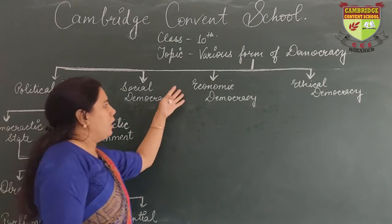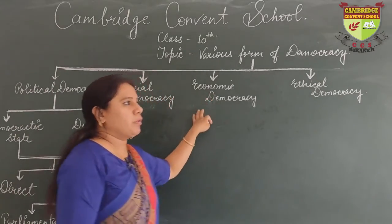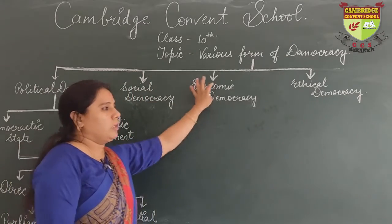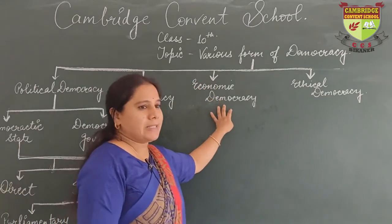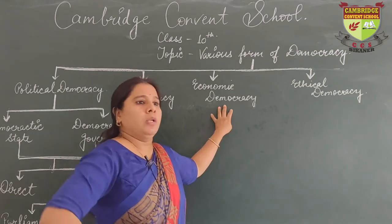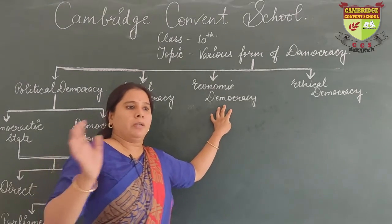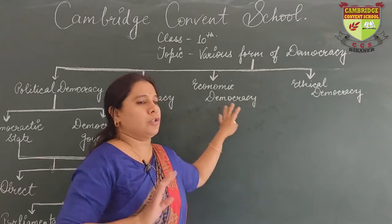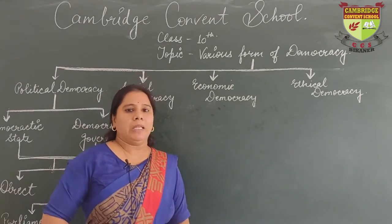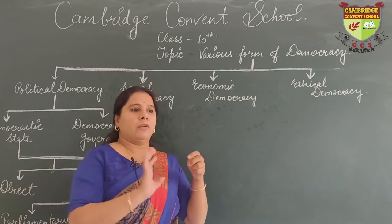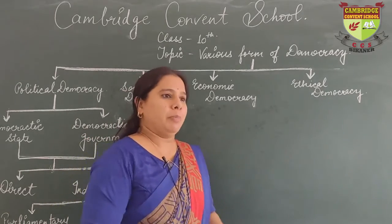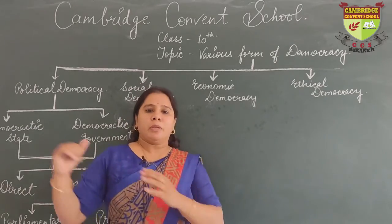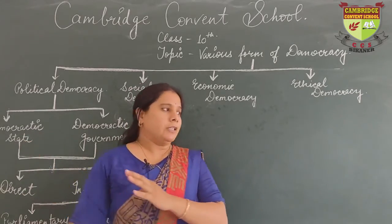Now let us come to economic democracy. Economic democracy is basically democracy based on economy. It says that there should be equal distribution of wealth in society and there should not be any accumulation of wealth in a particular group of people. Wealth should be equally divided among all members of society.